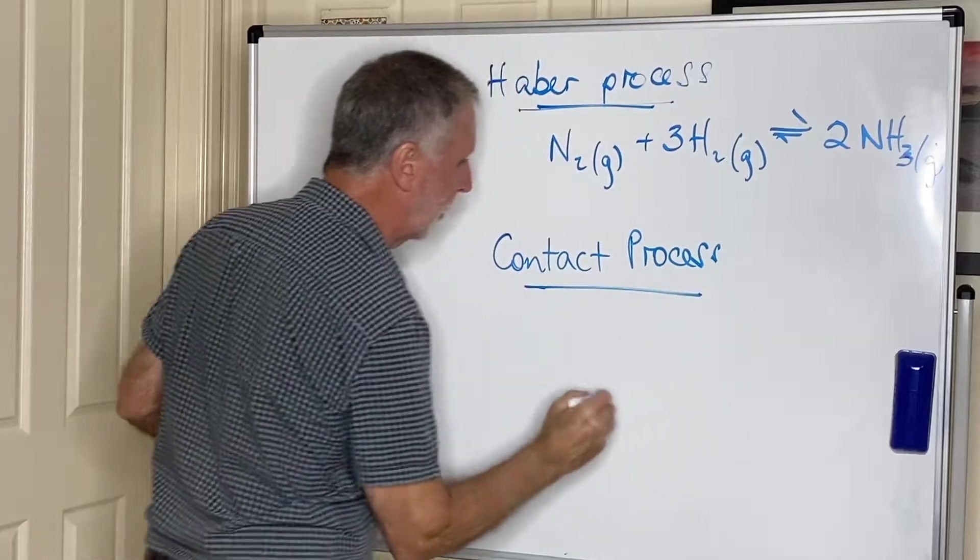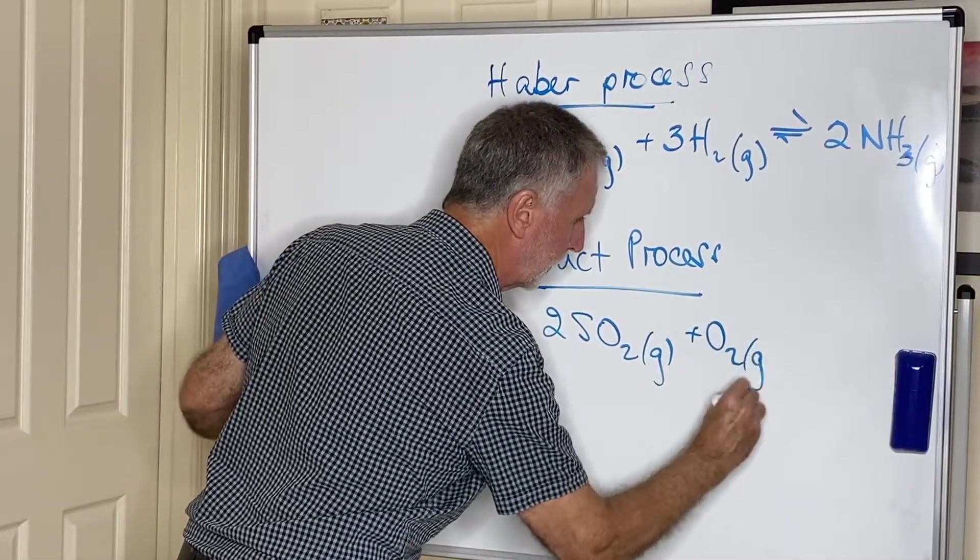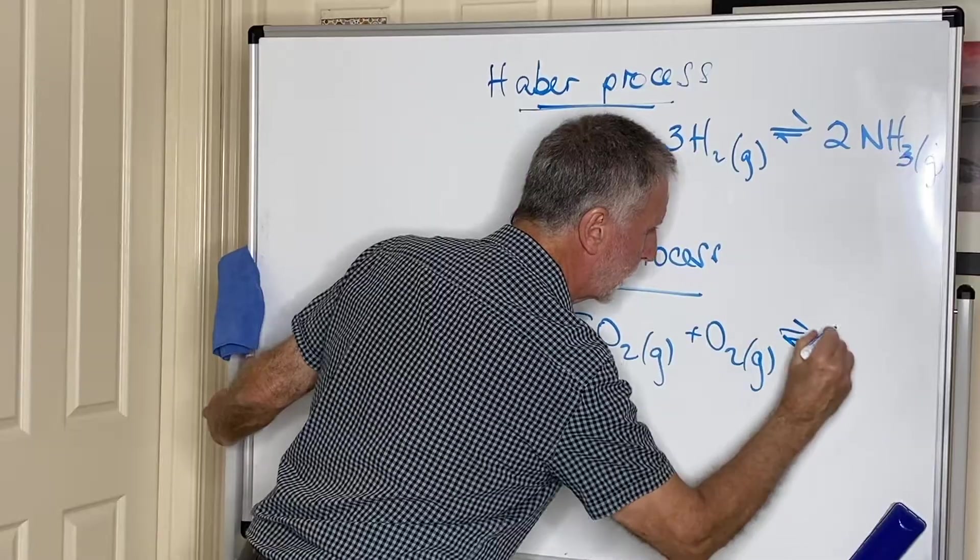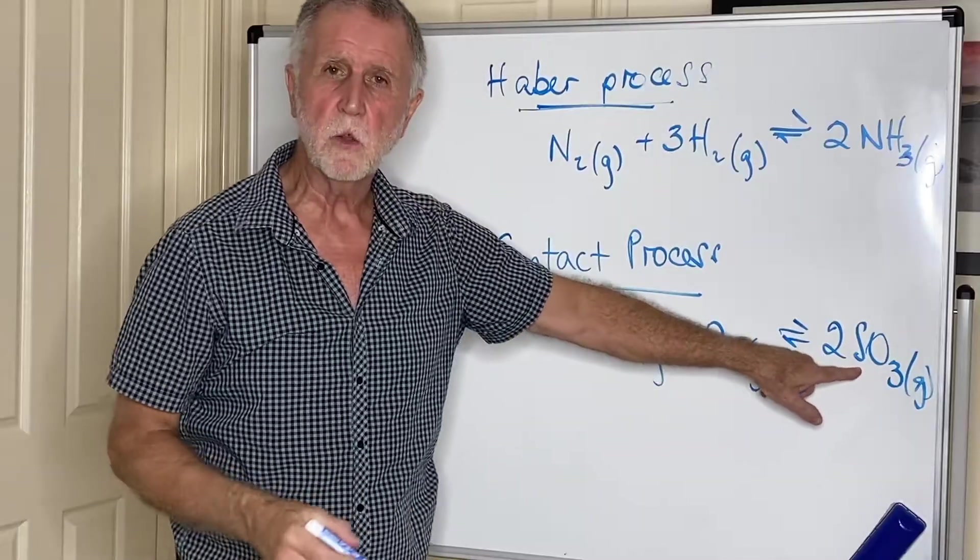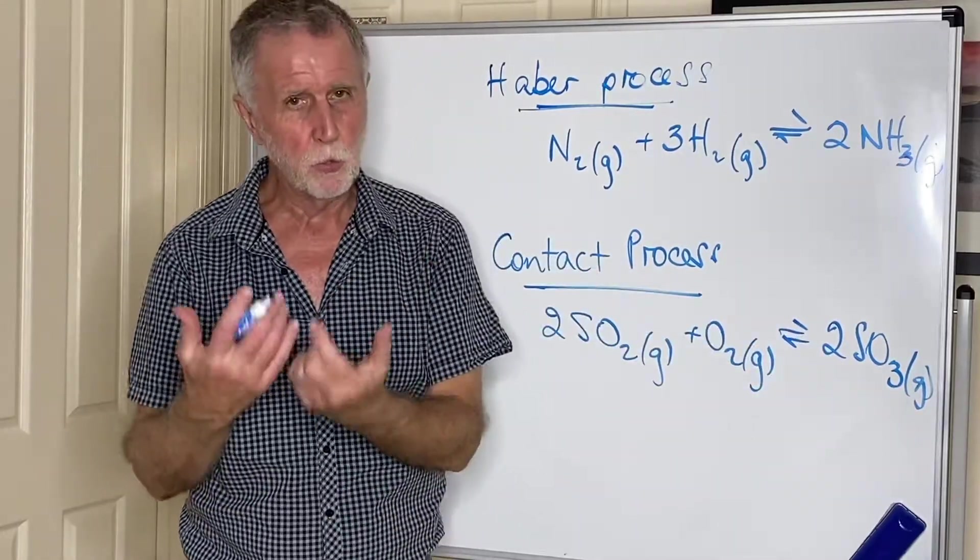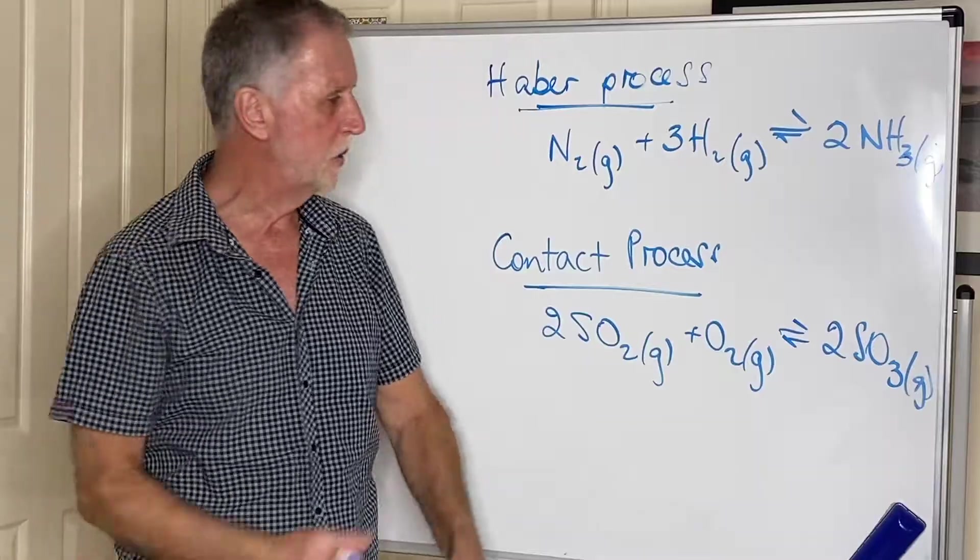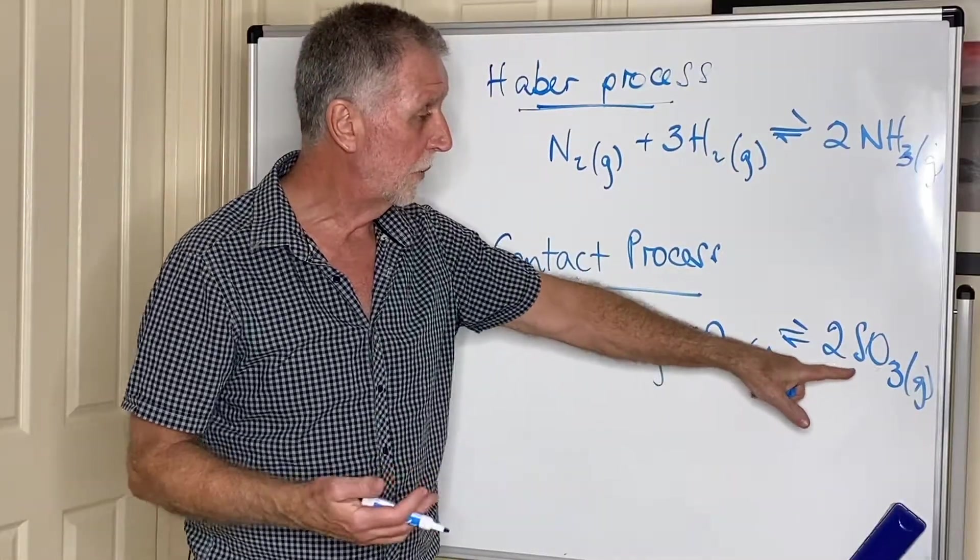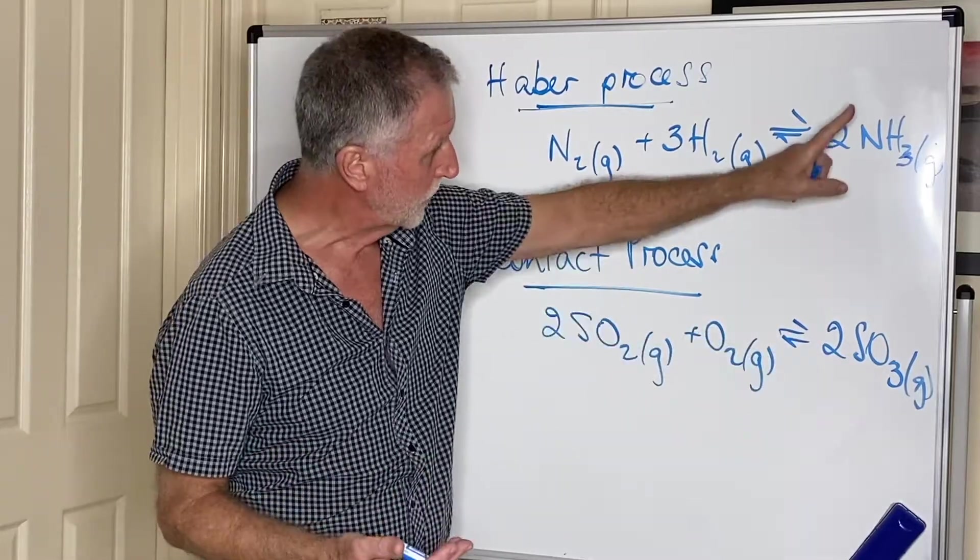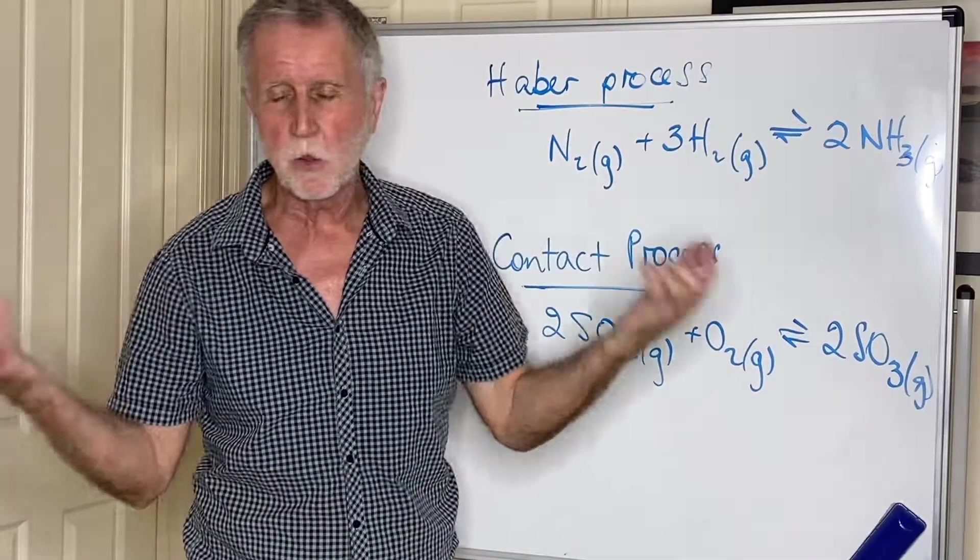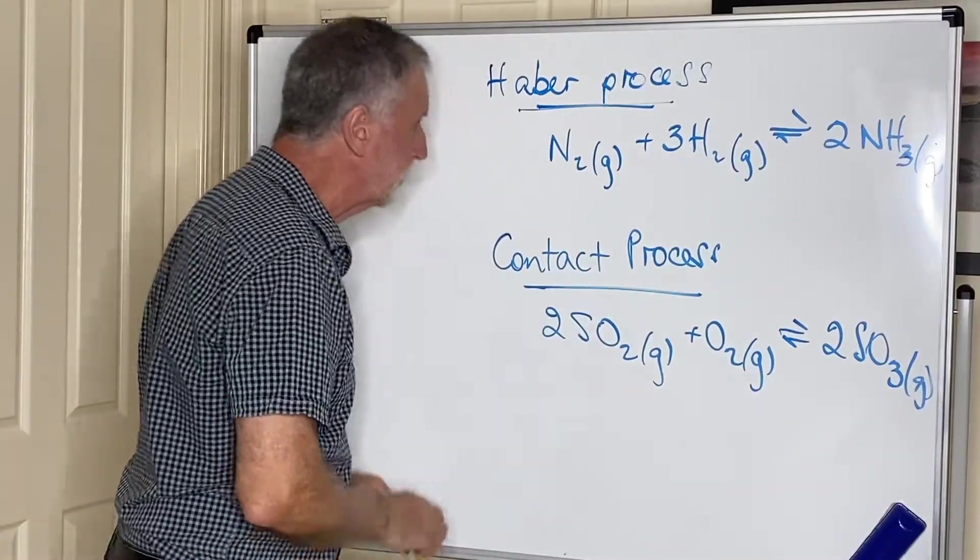A very important process where sulfur dioxide is combined with oxygen to make sulfur trioxide. This in turn is dissolved in water to make sulfuric acid, which is a very important chemical. Sulfuric acid is used in lots of industries: the dye industry, the paint industry, lots of chemical production. It also combines with ammonia to make ammonium sulfate, which is one of the most commonly used fertilizers. Both are very important processes and you need to know about both of them.